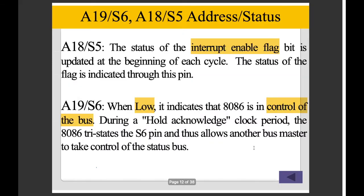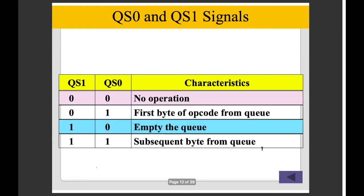What is the interrupt? If S6 is 0, then we have a power signal — this is the interrupt. There is also the queue status signal, called QS0 and QS1. If we have QS0 and QS1, we define the queue status.